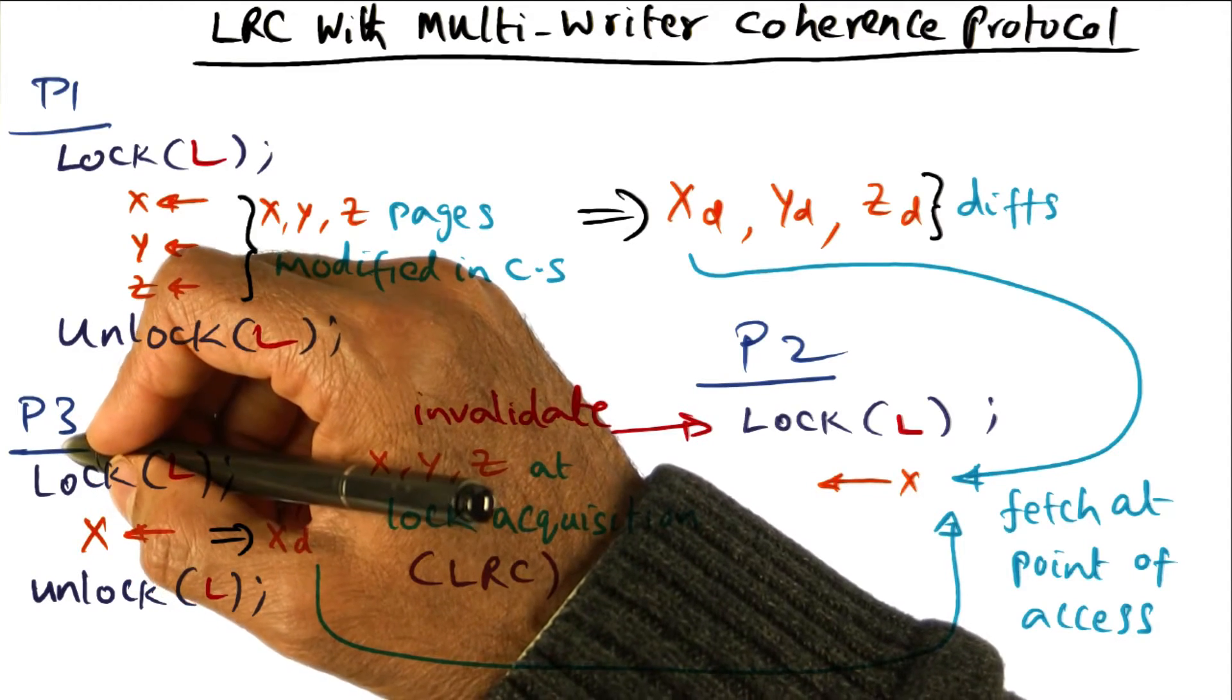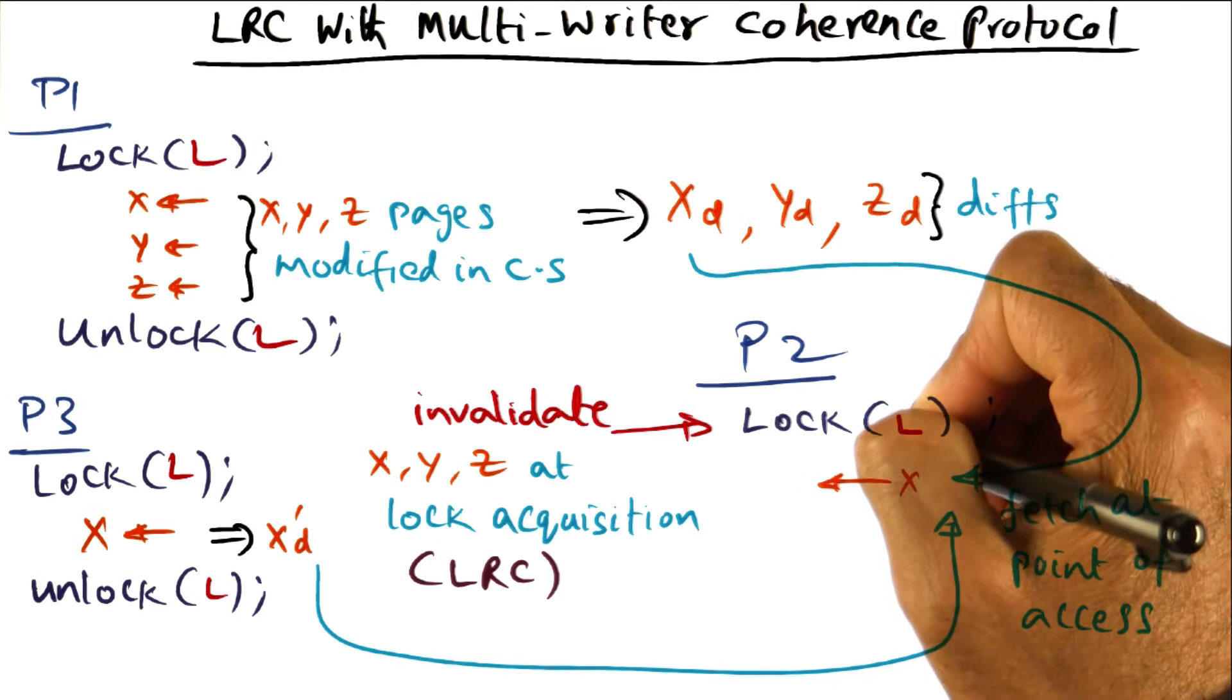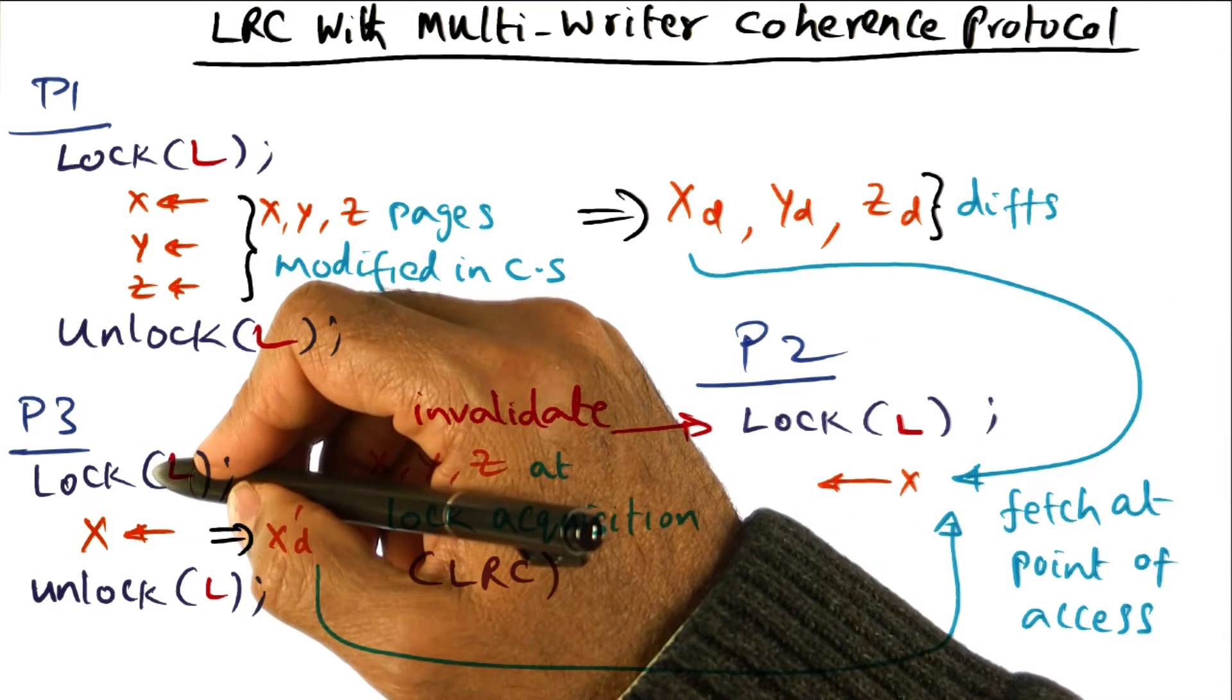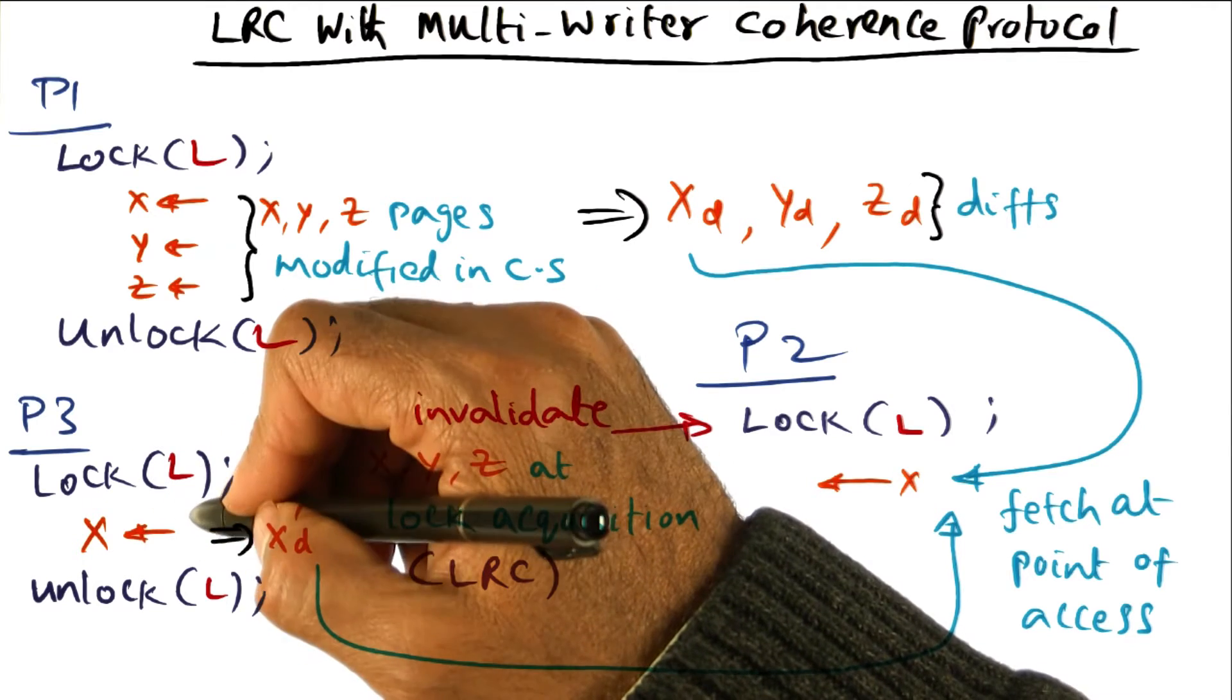Some of you may have thought of this already, and that is, prior to P2 getting its lock, it is possible that maybe another processor, say P3, also use the same lock.